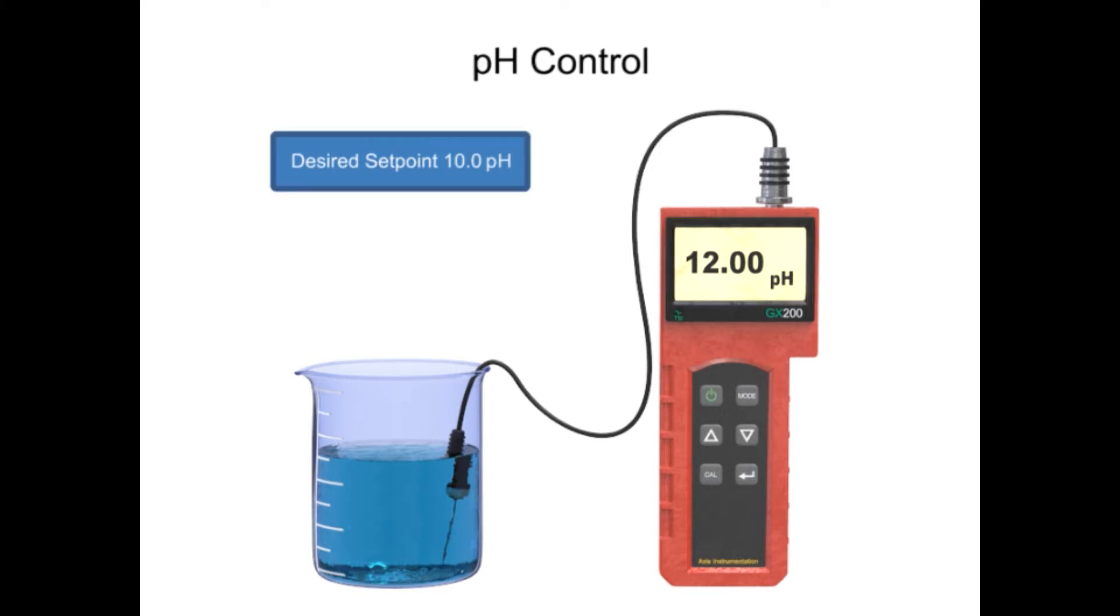When a high alkaline level is detected in the solution, an acid is added to decrease the pH level.